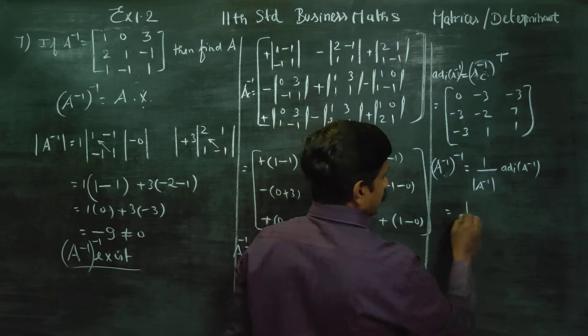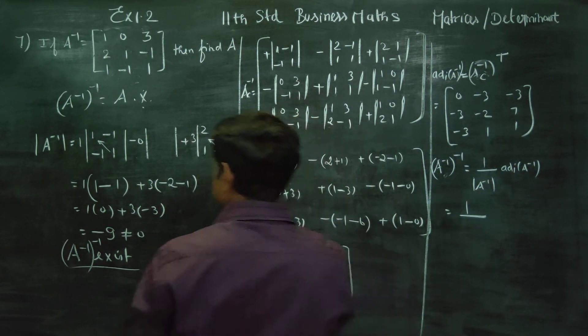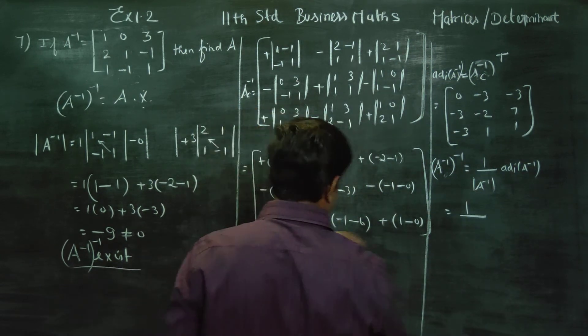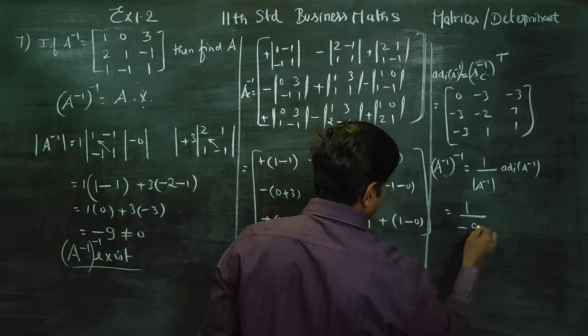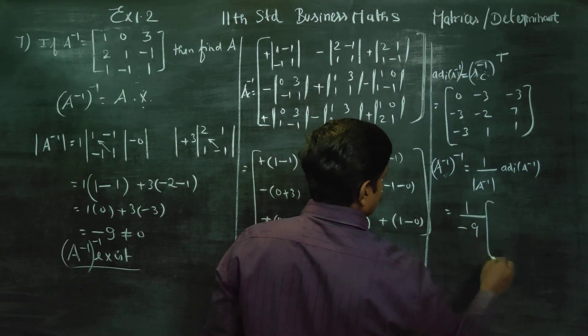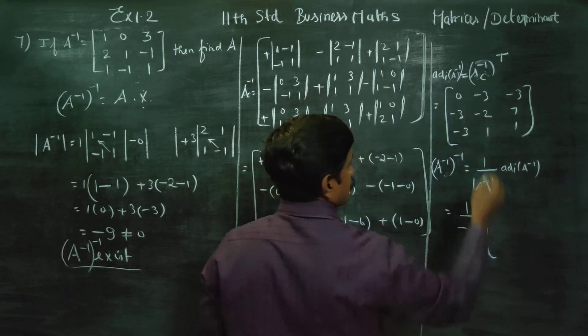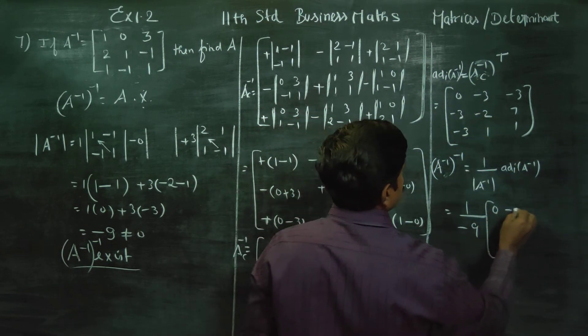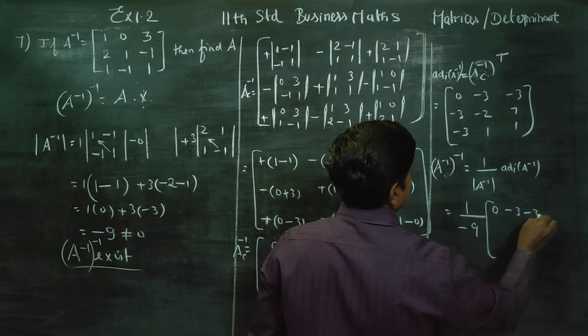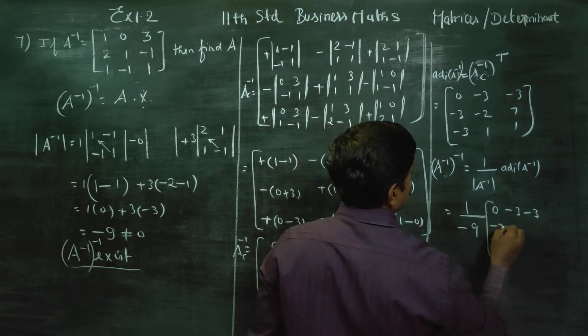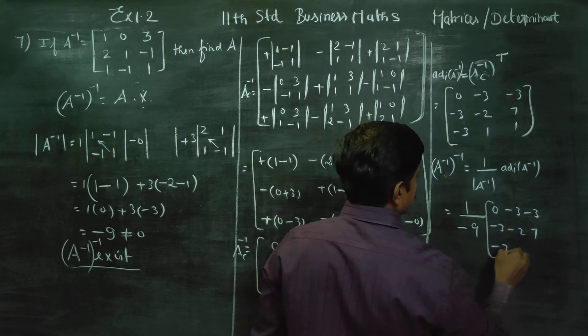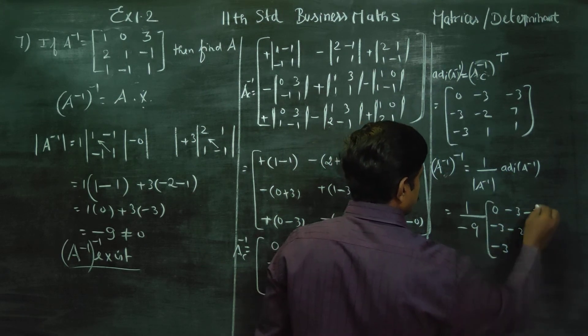1 by determinant — the determinant will help us note it is minus 9. The adjoint includes: 0, minus 3, minus 3, minus 3, minus 2, 7, minus 3, 11.